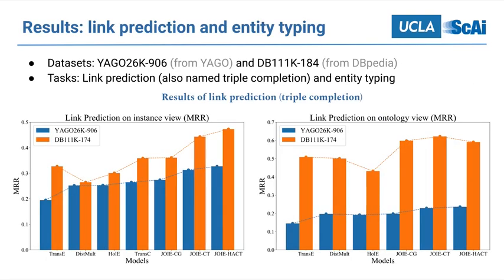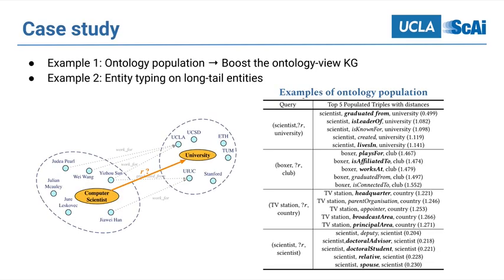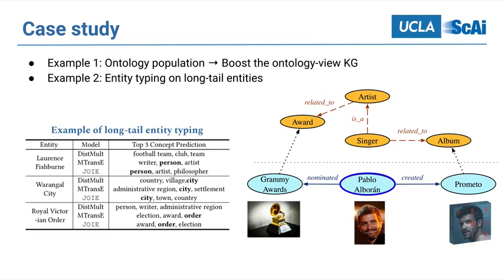Our experiments are based on datasets from DBpedia and Freebase, and we evaluate Joey on link prediction and entity typing tasks. The results show that our model can significantly outperform state-of-the-art baselines. Joey can also populate new relational facts in the ontology view from the instance view, enhance the ontology view quality, and make it more complete and informative. Our model can also help with entity typing for long-tailed entities.